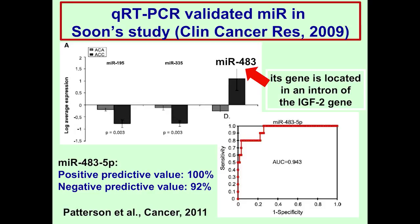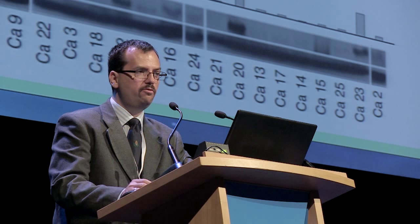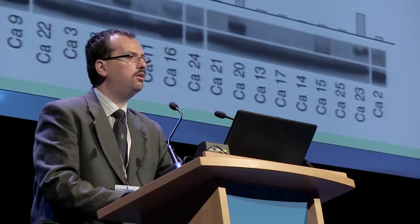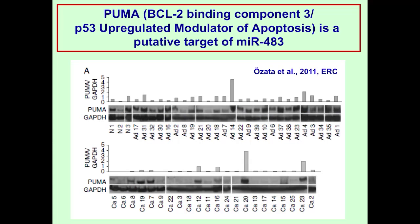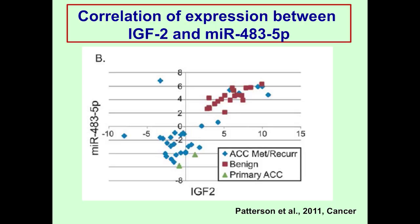Overexpressed miR-483-5p has a very high positive predictive value. Another microRNA to highlight is the underexpression of miR-195, which is the most consistently underexpressed microRNA in adrenocortical cancer. Very little is known on the pathogenic relevance of overexpressed miR-483 in adrenocortical cancer; in this study, one of its targets was validated to be PUMA — the P53 upregulated modulator of apoptosis. As we have heard in the first talks today, P53 appears to be a major player in adrenocortical cancer, with most advanced ACC having mutations in P53. As miR-483 is located within an intron of IGF2, there is a strong correlation between IGF2 and miR-483-5p.